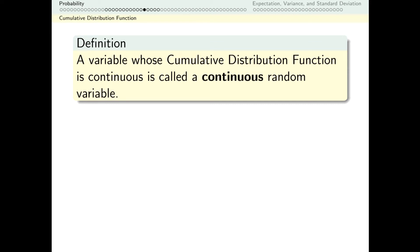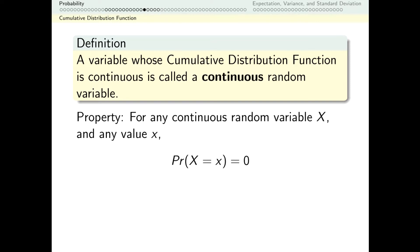Let's talk about a particular type of random variable called a continuous random variable. We define this as a random variable whose cumulative distribution function is continuous. There's one very surprising property of continuous random variables, and that's the probability of landing on any one singular value is always zero.